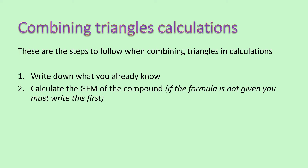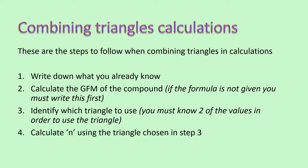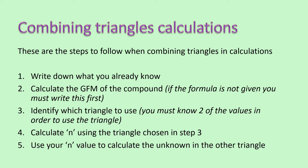Step two: calculate the GFM of our compound. If the formula is given to you, you can use that directly. But if you've only been given the name of the compound, you need to write the formula first before calculating the GFM. Step three: identify which triangle to use first. There must be two known values in your triangle before you can use it — one triangle will have two known values after writing down what you know and calculating the GFM. Step four: use that triangle to calculate the number of moles. Step five: use the number of moles from one triangle in the second triangle to work out what you're looking for.